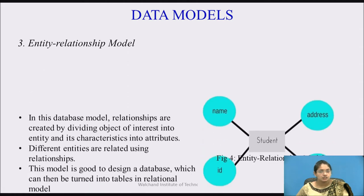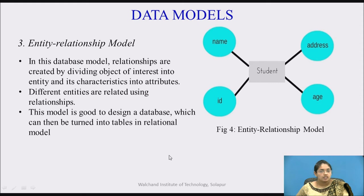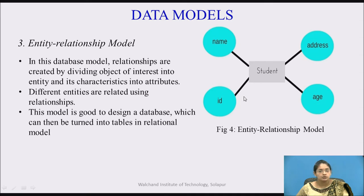Next is the entity relational model. In this database model, relations are created by dividing the object of interest into the entity and its characteristic attributes. Different entities are related using relations. This model is good for designing a database that can be turned into tables in relational models. For example, student is the entity and it branches into different attributes called name, id, address, and age. It is very easy to convert this model into tables.